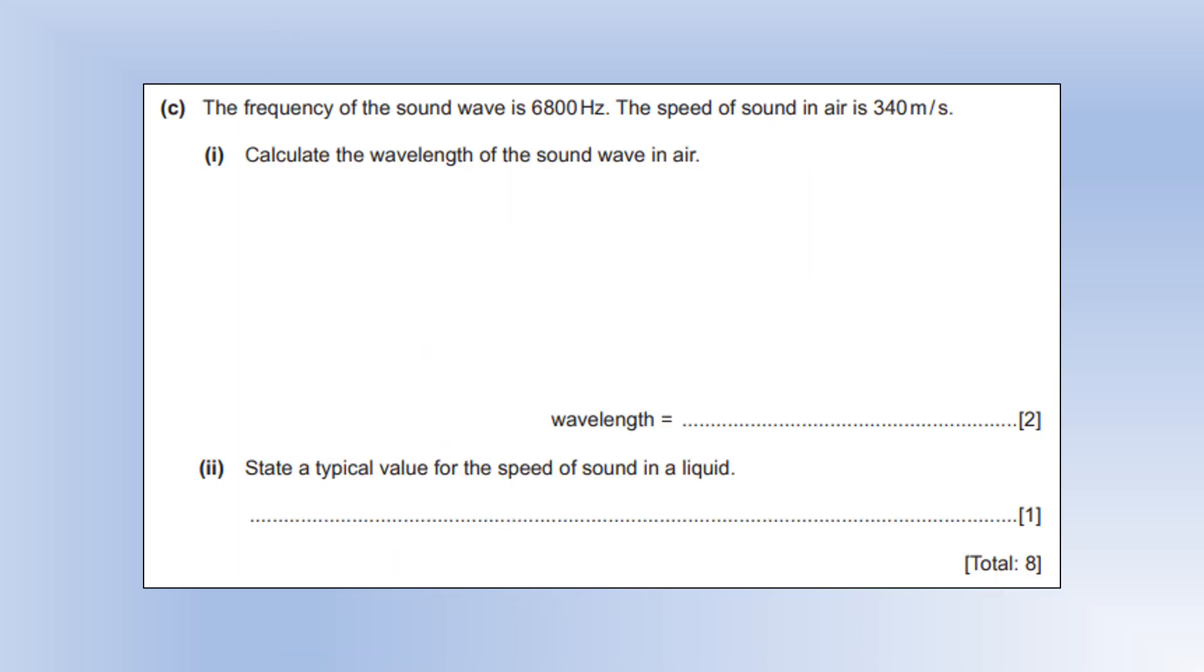The frequency of the sound wave is 6800 hertz. The speed is 340 metres per second. Calculate the wavelength. So, we're going to use the wave equation, which is this one. You can rearrange to calculate the wavelength, and then plug the numbers in and get what that is.